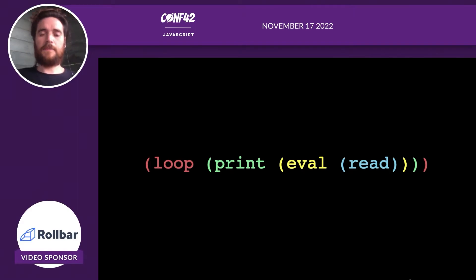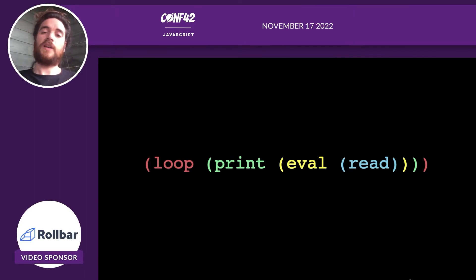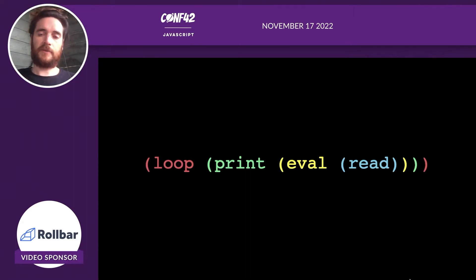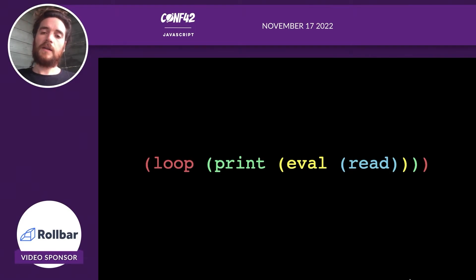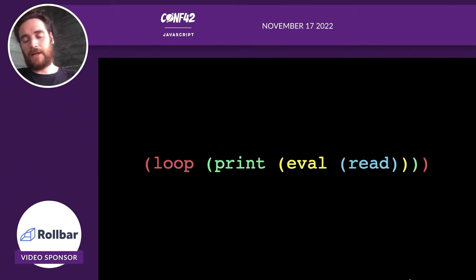The REPL is named after the functions in a very short LISP program. Each matching pair of parentheses is a function call. The READ function is called with no arguments — it sends a prompt to the user's teleprinter and waits for them to type in some source code. When the user presses RETURN, READ returns that source code to EVAL. EVAL evaluates and runs the source code and returns the resulting value. That value is passed to PRINT, which prints it out to the teleprinter. When PRINT is done, LOOP sends us back to READ. READ, EVAL, PRINT, LOOP — REPL.